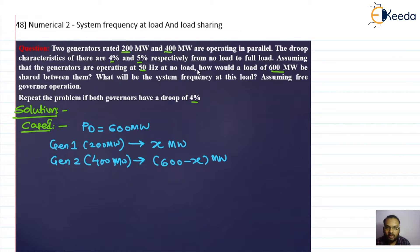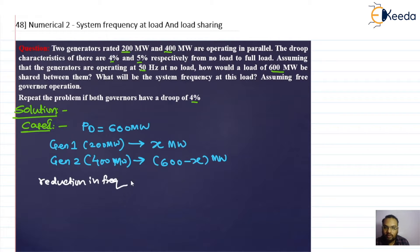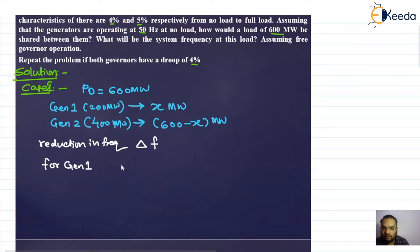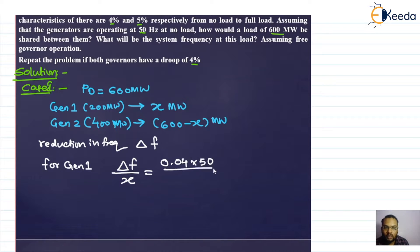The frequency will reduce as we load the generators — the no load frequency is 50 hertz, and as we increase the load, frequency reduces. Let this reduction in frequency be Δf. For generator one, the relationship is: Δf divided by x equals the droop characteristic, which is 0.04 multiplied by 50 hertz, divided by 200 megawatt.